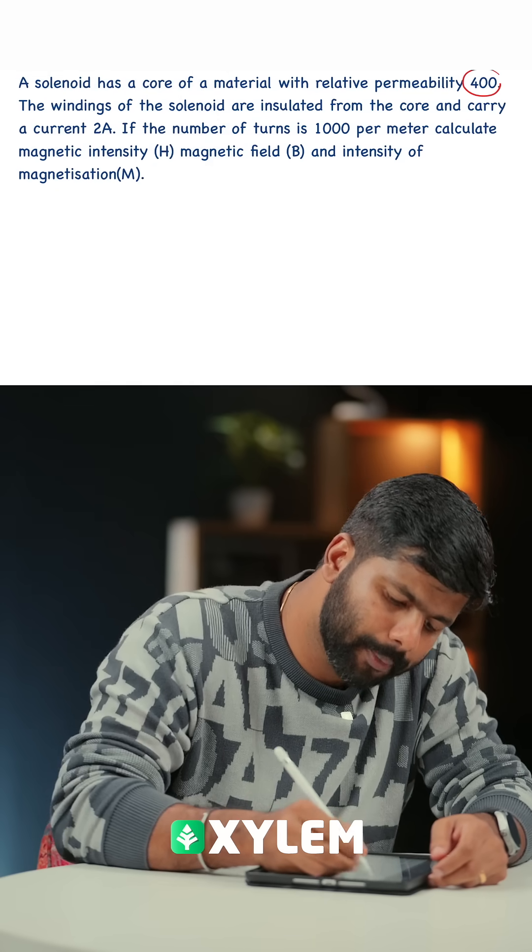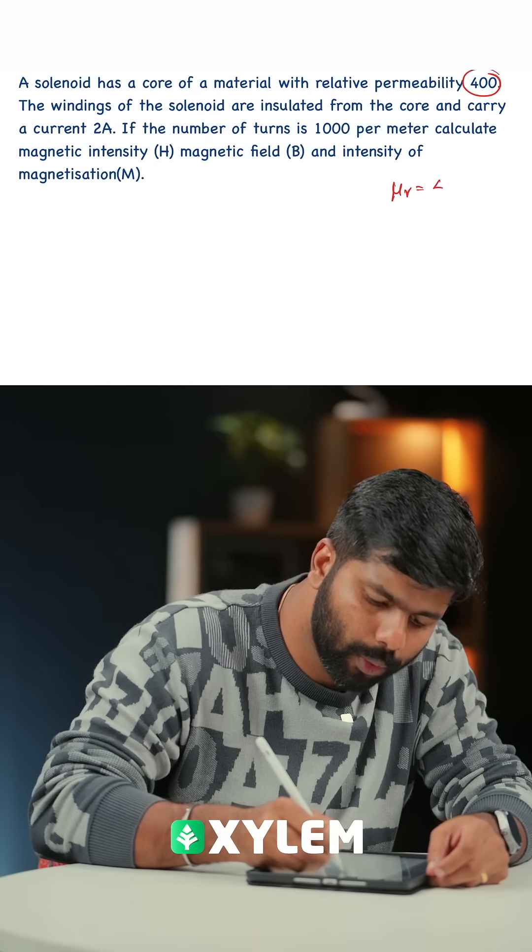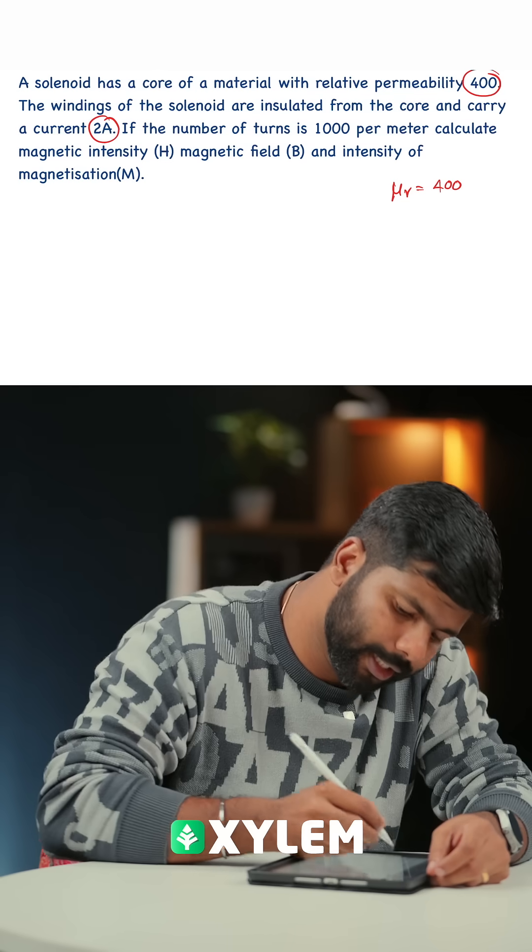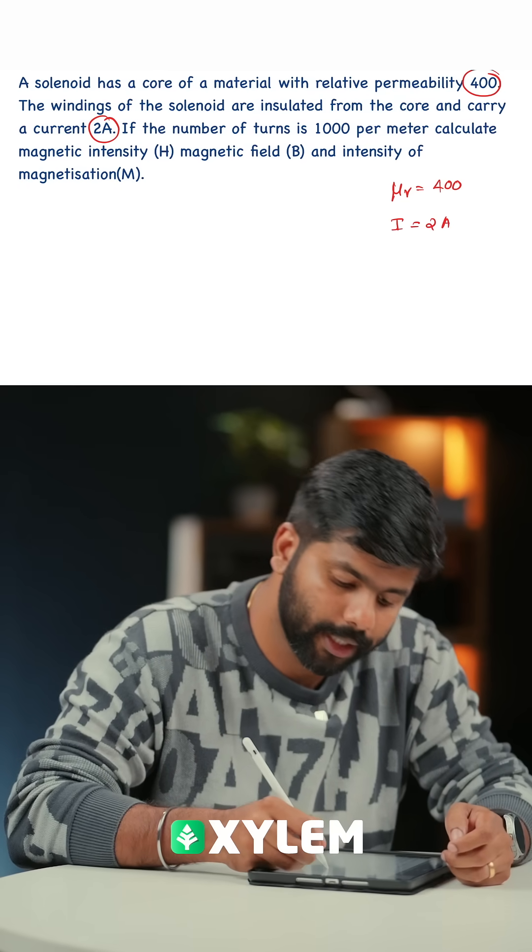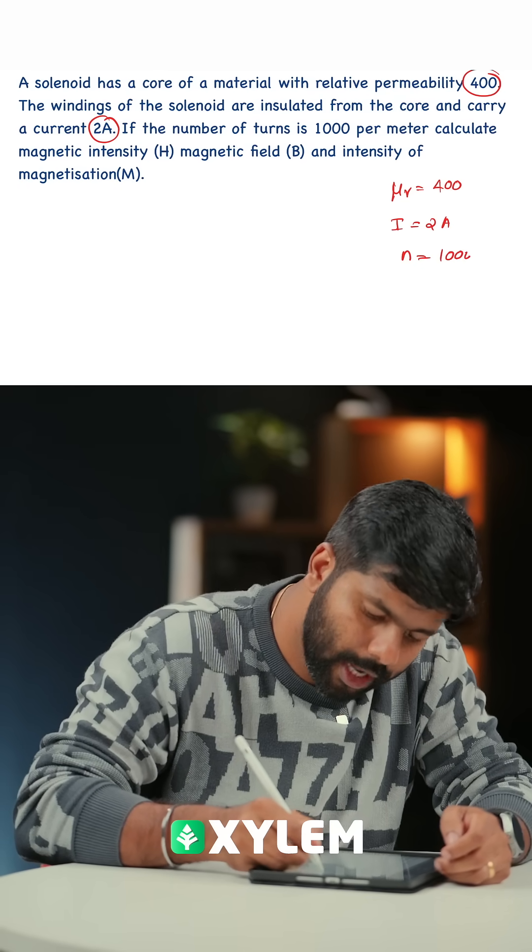The question is related to μr equal to 400. Then current is i equal to 2A, and number of turns per unit length is 1000. Question is H.